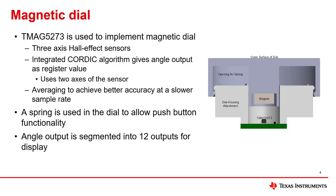The magnetic dial is implemented using a single TMAG5273. This device is a three-axis Hall effect sensor with an integrated CORDIC algorithm. This provides the angle of the magnetic field through a register read and removes the need to perform any angle calculations by the MCU. The third axis of the device is used to detect the push on the dial, implemented by using a spring to hold the dial in place until a force is applied to the top of the dial.